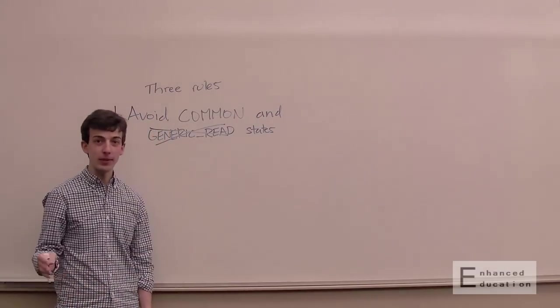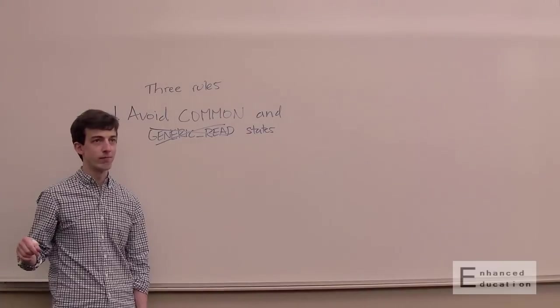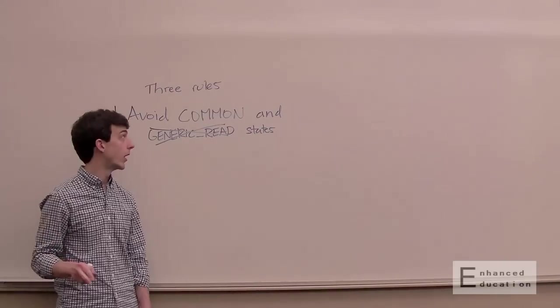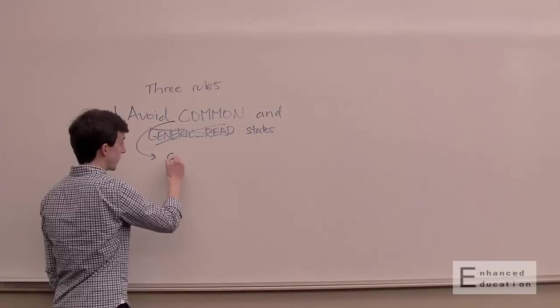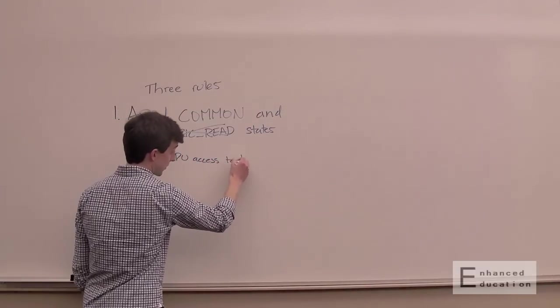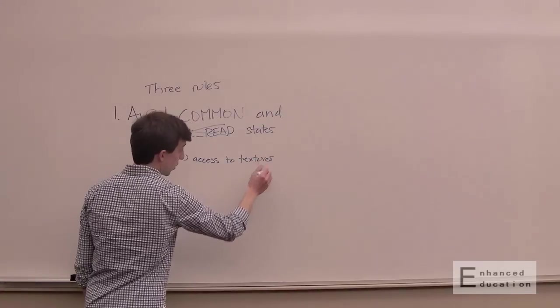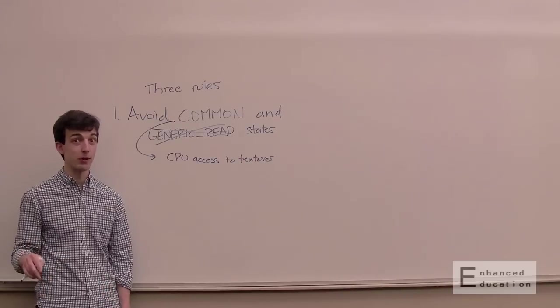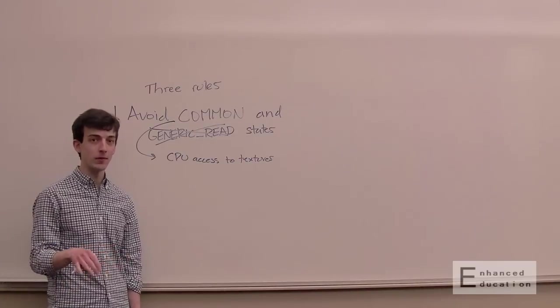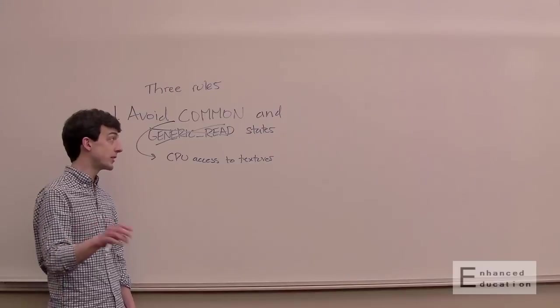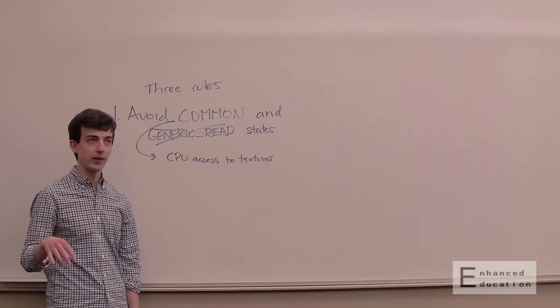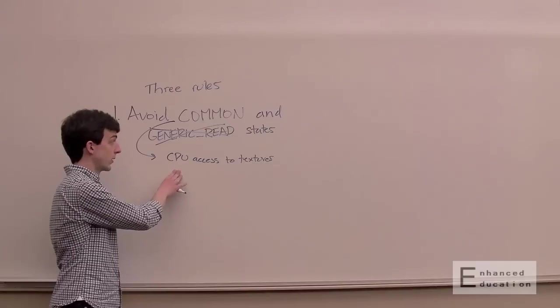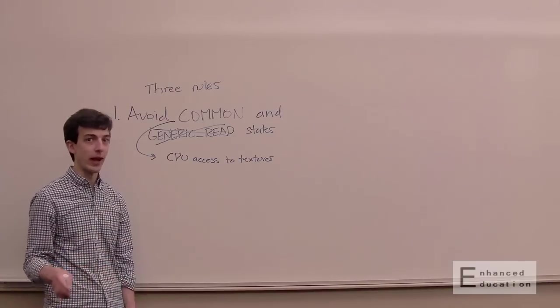Common, same deal. A common state implies that it can be used in a lot of different ways. You need to go to common for really two cases in particular and otherwise you should avoid it. Common is needed for CPU access to textures. So if you have a texture that is in CPU visible memory, and this is actually not very common, you have to really go out of your way to place a texture in CPU visible memory. Most of them are going to be in local video memory which is not CPU accessible. If it is in that memory and you want to access it on the CPU, you want to make sure it's in a format that the CPU will be able to understand and that all writes have finished. That's what the common state does.